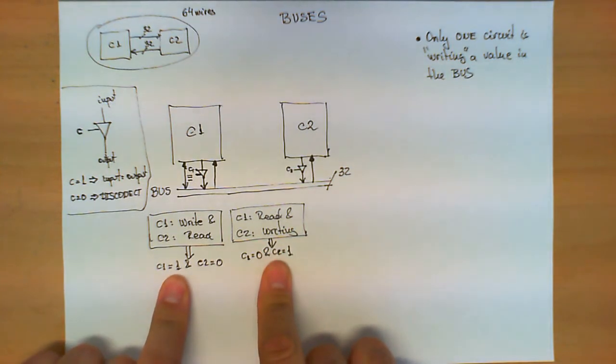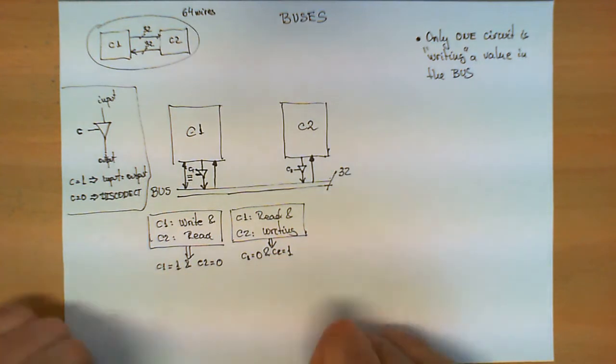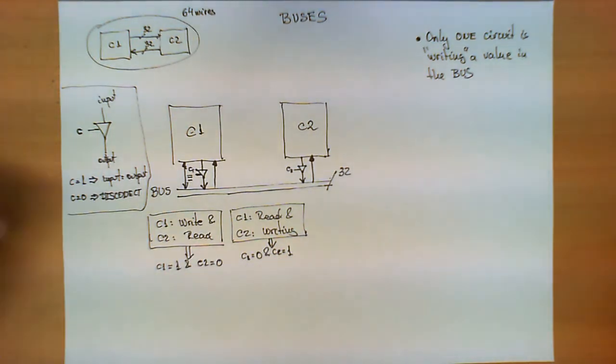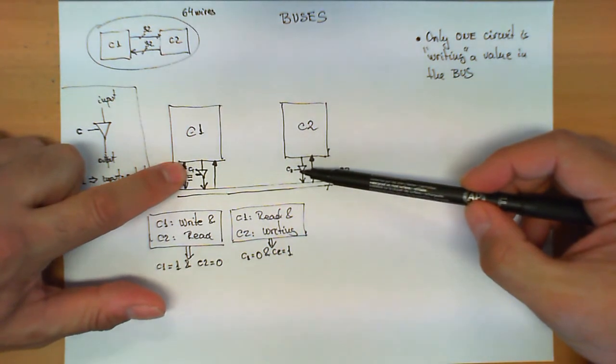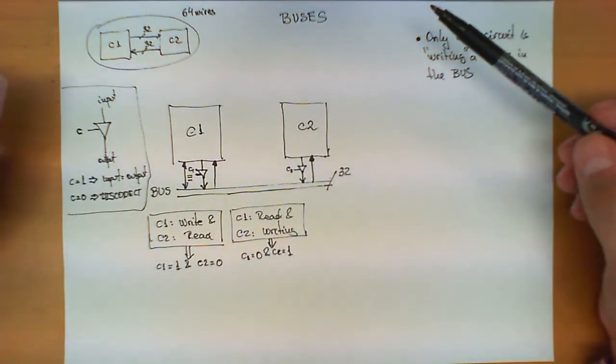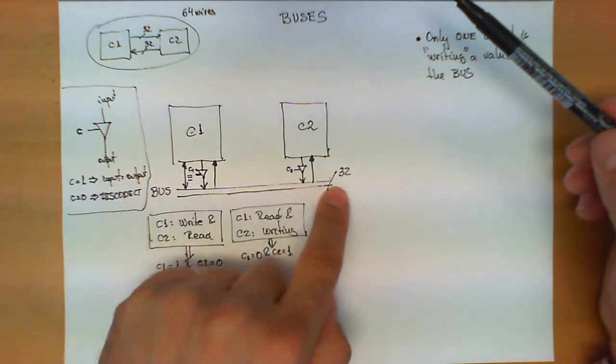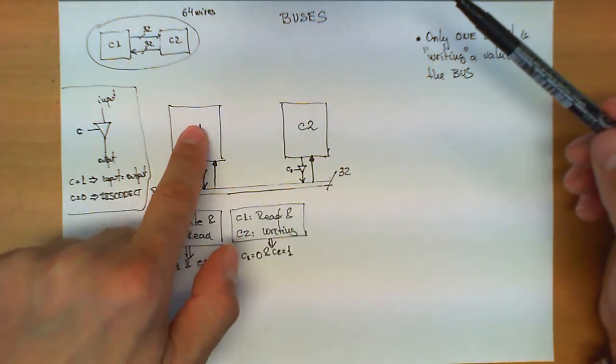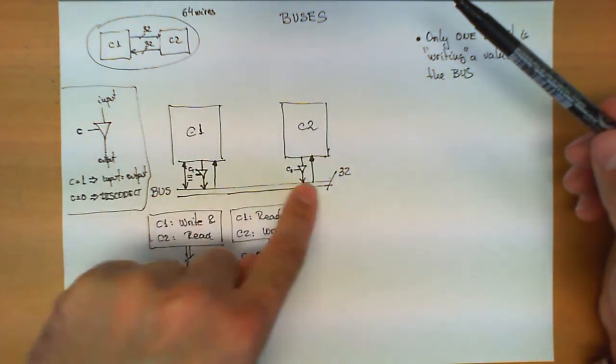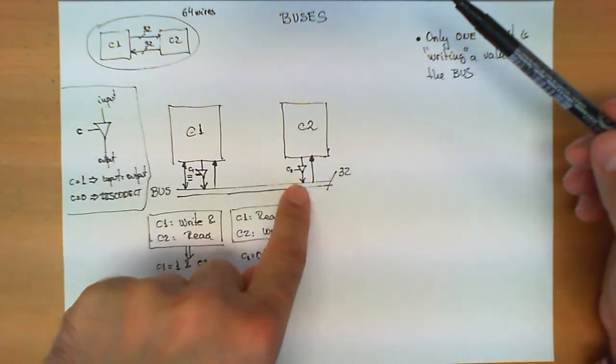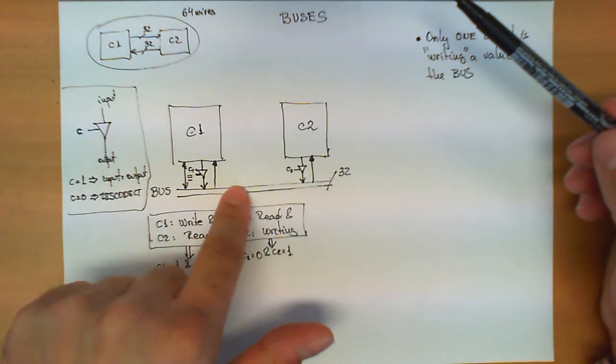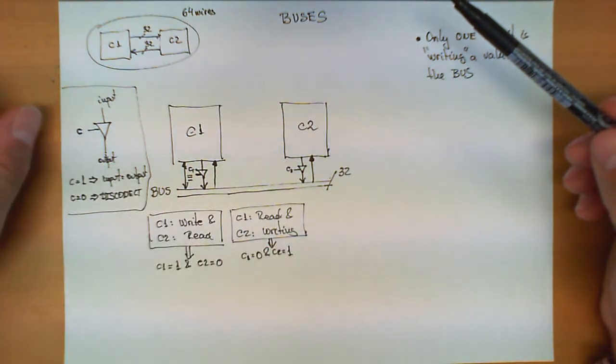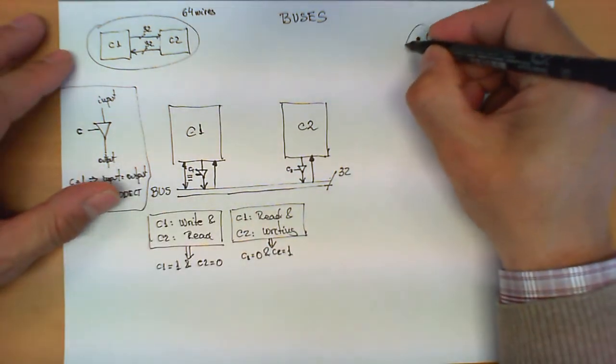This is represented here by the fact that only one circuit is writing on the bus. The next question we can ask is what happens if both of these signals, C1 and C2, are equal to 1? The best way to imagine what happens is that you will have 32 wires here, and this circuit might be forcing a certain value into these wires and this other circuit has another different value. When that occurs, the value of these wires is what we call undefined or undetermined. And for this reason, this rule exists.